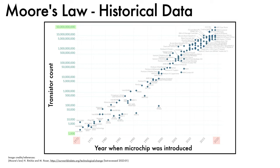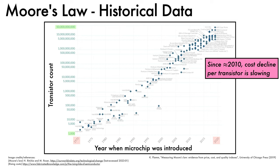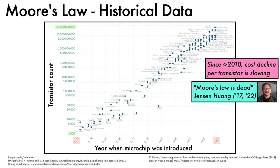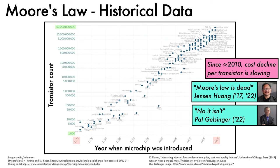However, this graph just shows transistor counts. Moore's law also relates to cost, and as the technology became more intricate, estimated by some analysts to be around 2010, the cost decline per transistor began to slow, and in some cases costs began increasing. This has led Nvidia CEO Jensen Huang to assert that Moore's law is dead, while Intel CEO Pat Gelsinger has responded with 'no it isn't'. Depending on how you measure costs and interpret Moore's law, it is either pushing up the daisies, or just hitting its stride.